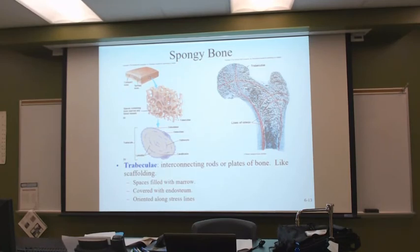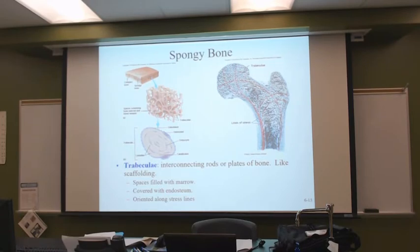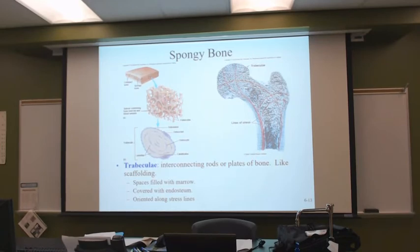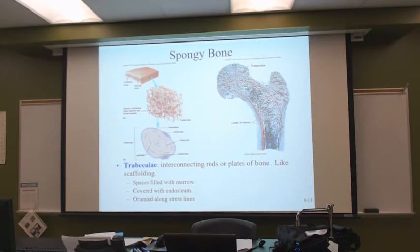When we think of a sponge, what comes to mind? Something that might absorb — light, squishy. But in this case, 'spongy' refers only to the look of it. Believe it or not, spongy bone is not squishy — it has plenty of strength. The way that it's made actually gives compact bone strength and makes it light enough that we're able to move around.